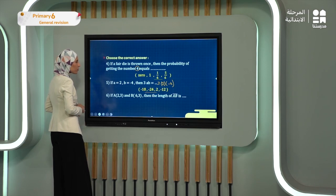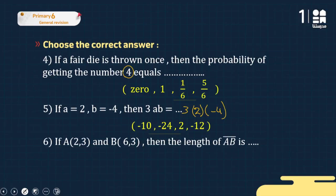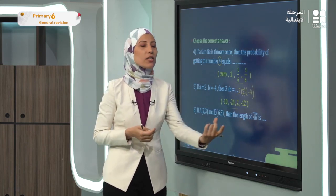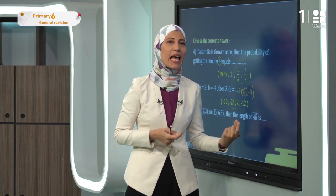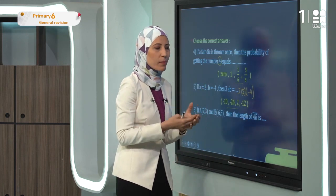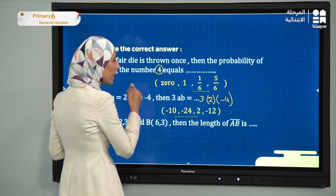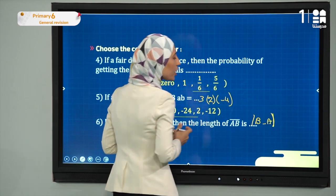Exercise six: given point A(2, 3) and point B(6, 3), find the length of AB. The rule for length on a number line is: absolute value of (ending point minus starting point). Since the y-coordinates are equal (both 3), they cancel. So the length = |6 - 2| = |4| = 4.